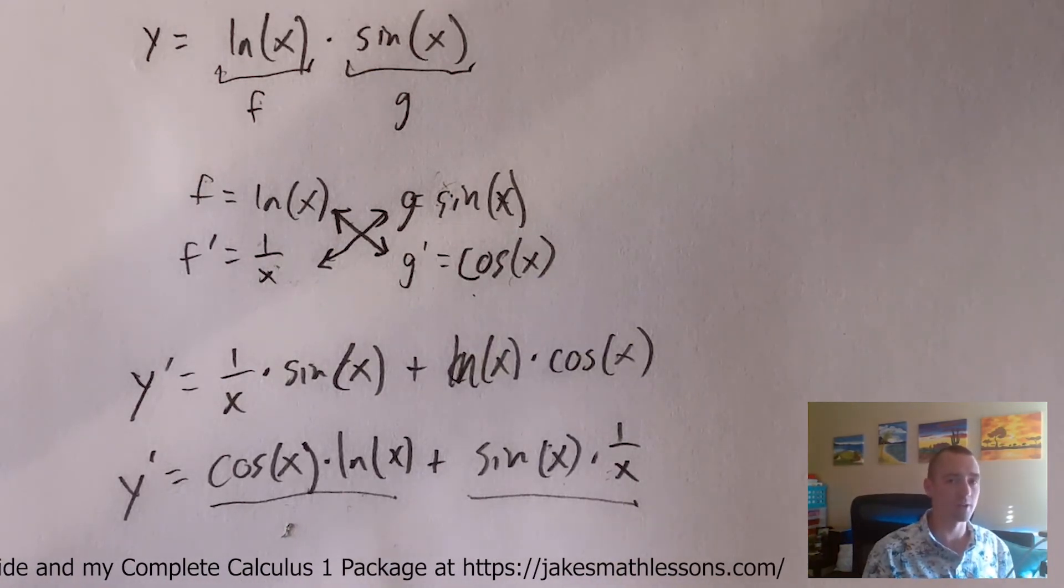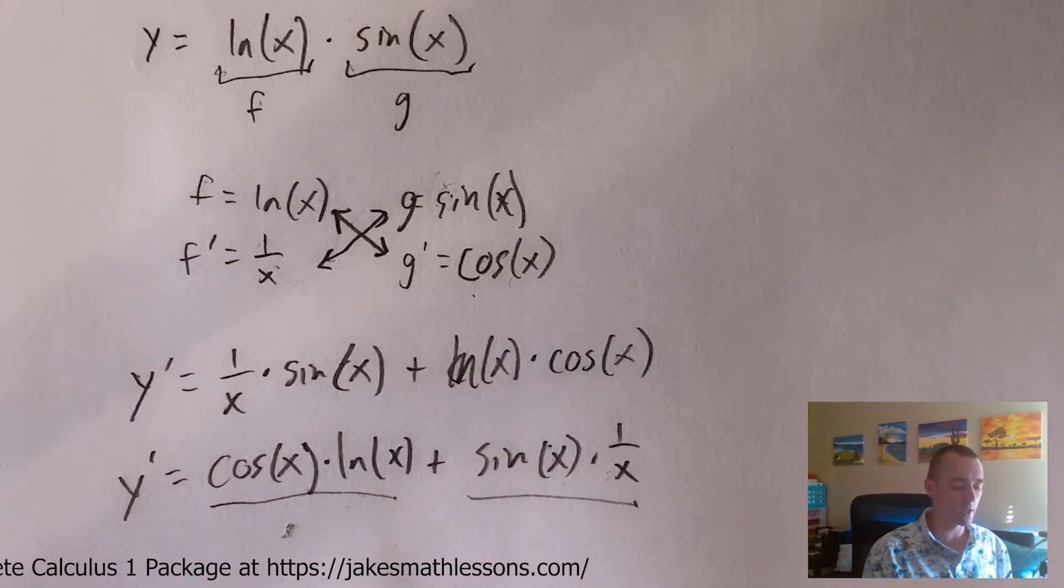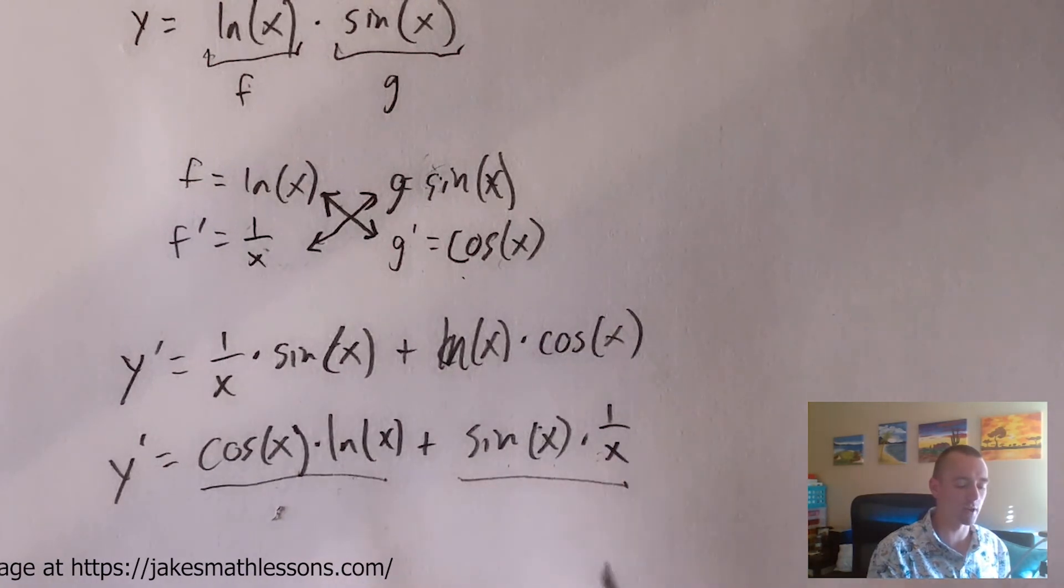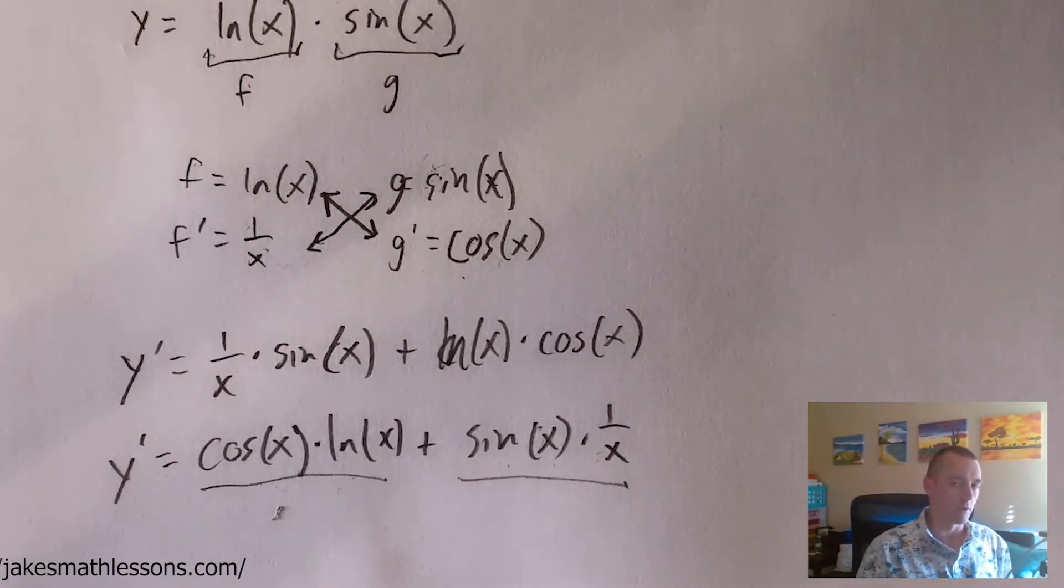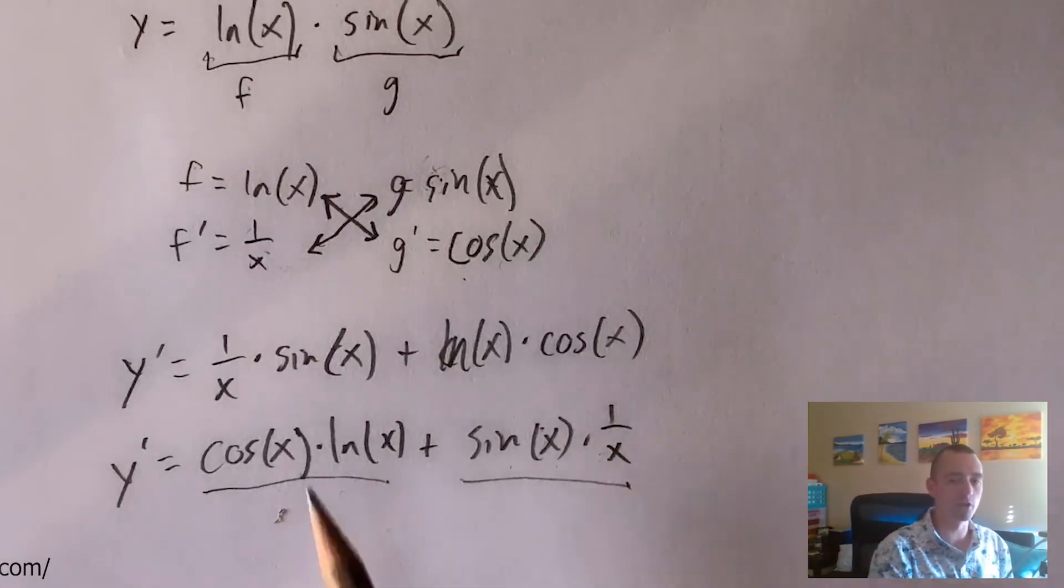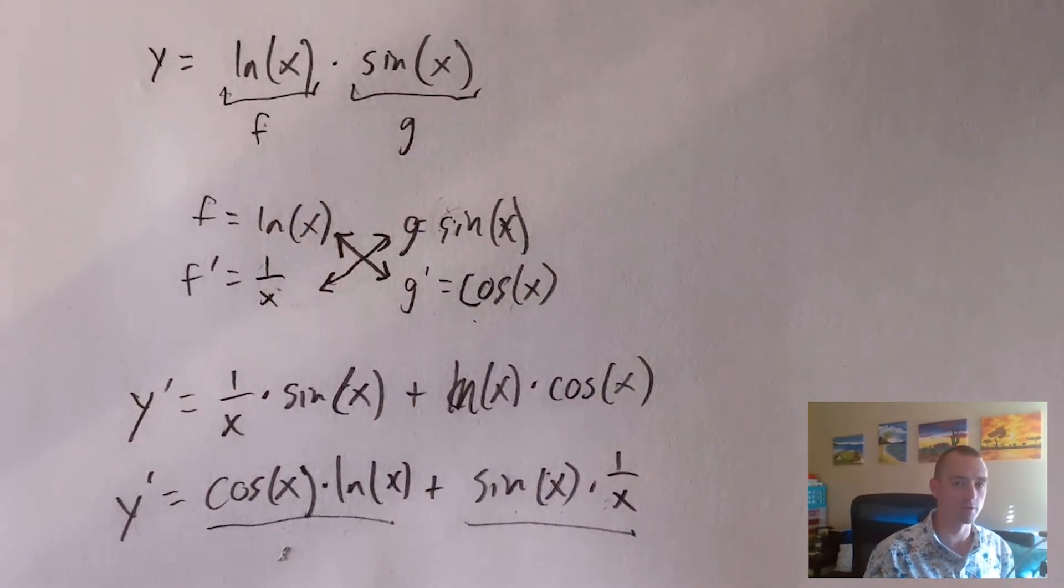And of course, a lot of times this can then be simplified in some way, and we can do that a little bit in these cases by putting sine of x times one over x instead as sine of x over x. But of course, simplifying doesn't actually change the value of the function. So these would both be correct answers for the derivative of this original function based on our use of the product rule.